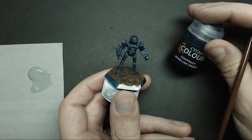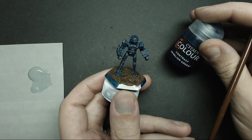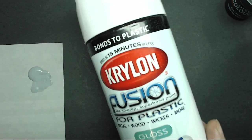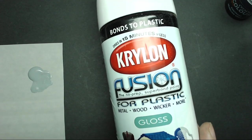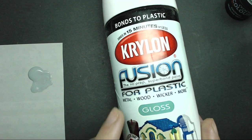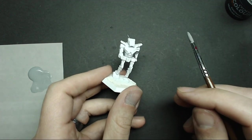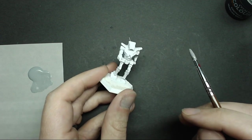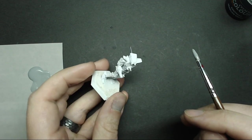We'll be using Achillean Green from their Contrast line. But first you're going to need to prime your miniature. I used this Gloss Krylon Fusion for plastic. You can also use GW's products if you wish. You want a smooth finish and the gloss is what helps interact with the paint. There may be some other brands that work, but this is what I've used.